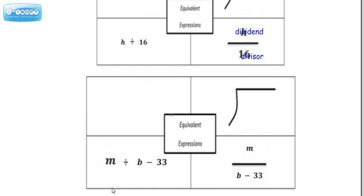Now another way we could express it is M divided by B minus 33. If we're going to use the division box, and of course the words would be M divided by the difference of B and 33.